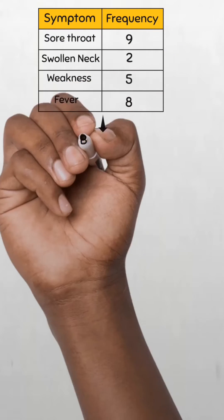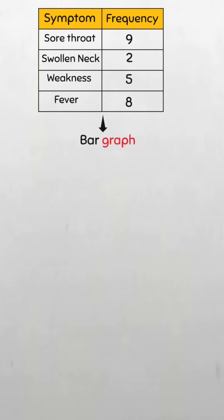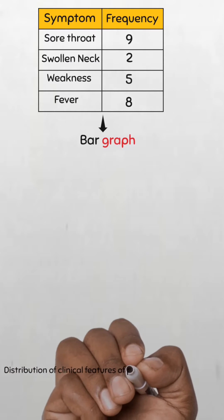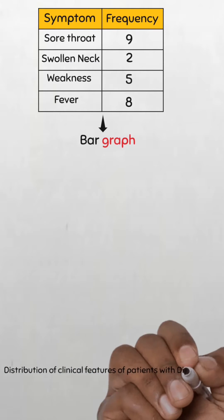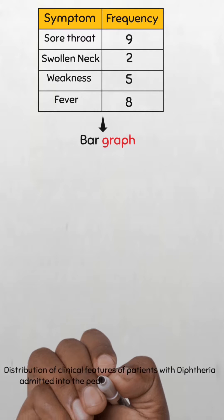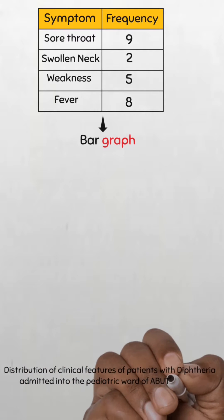To present this data in a bar graph, the first step is to write the title: distribution of clinical features of patients with diphtheria admitted into the pediatric ward of ABUTH.